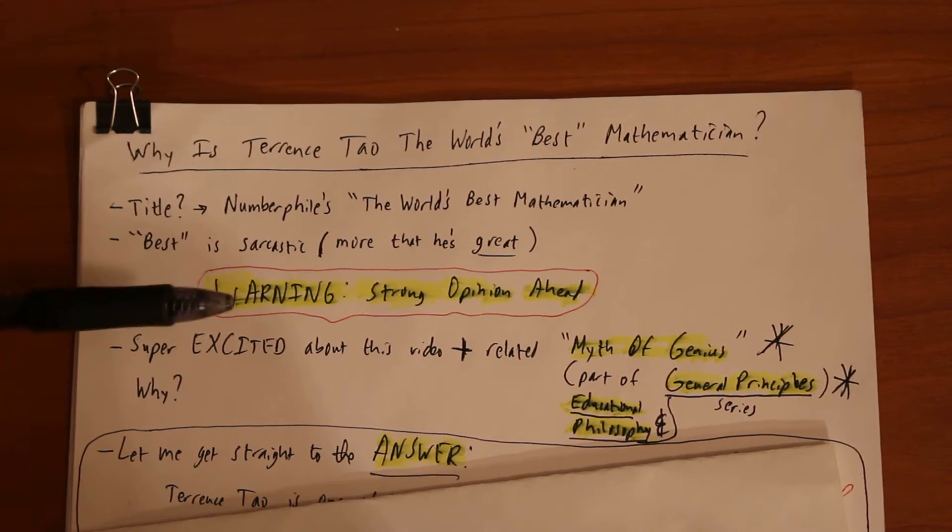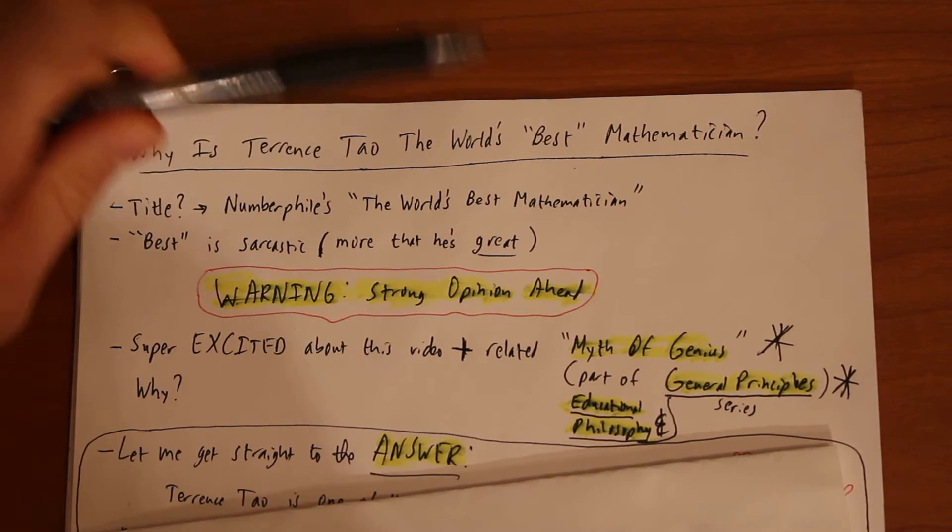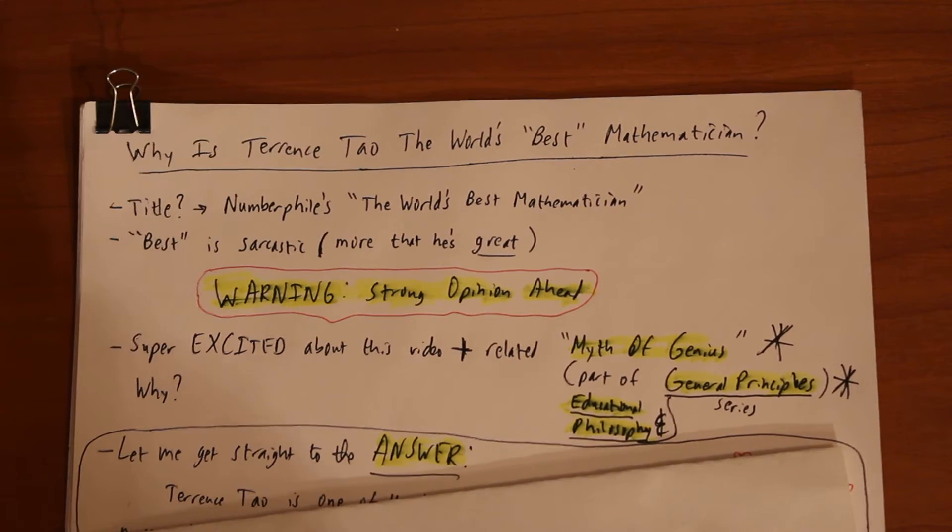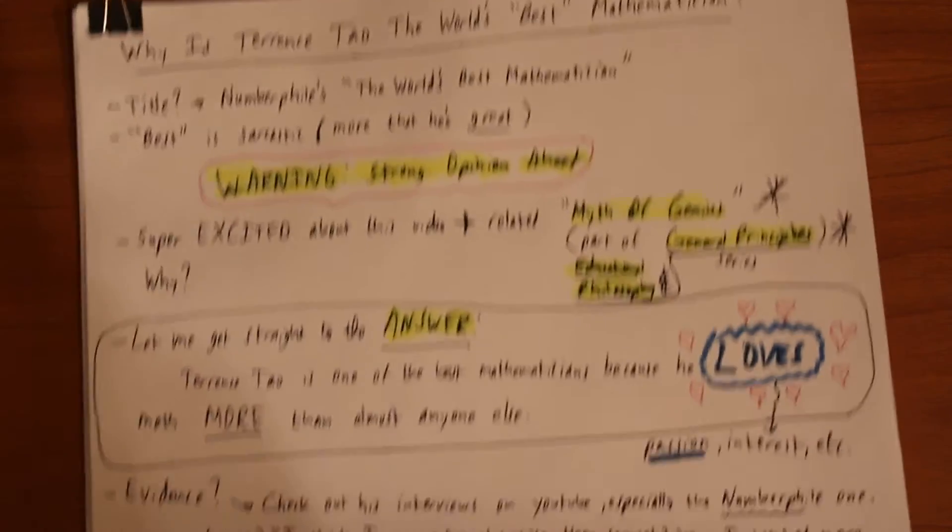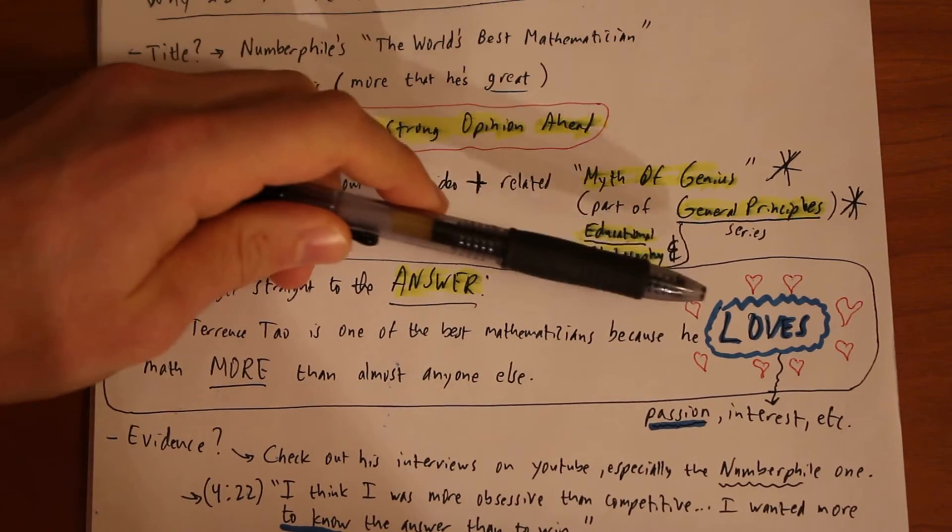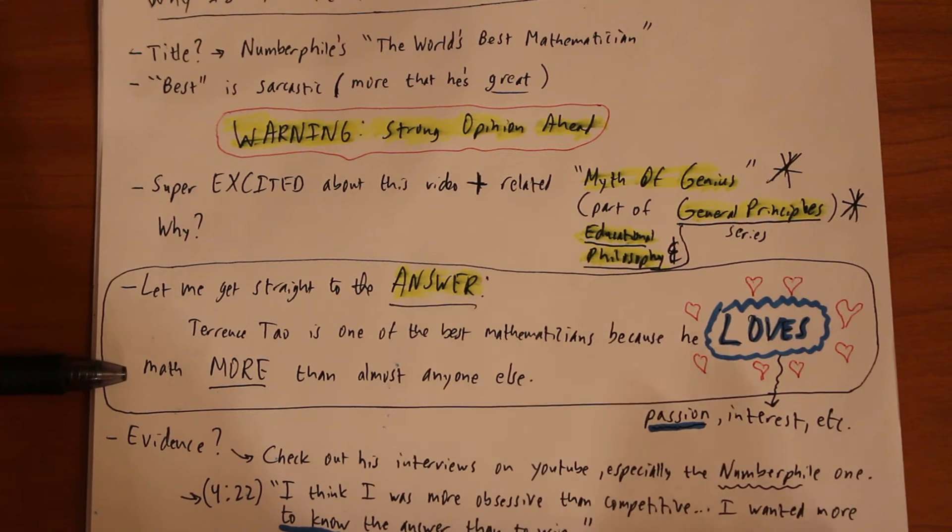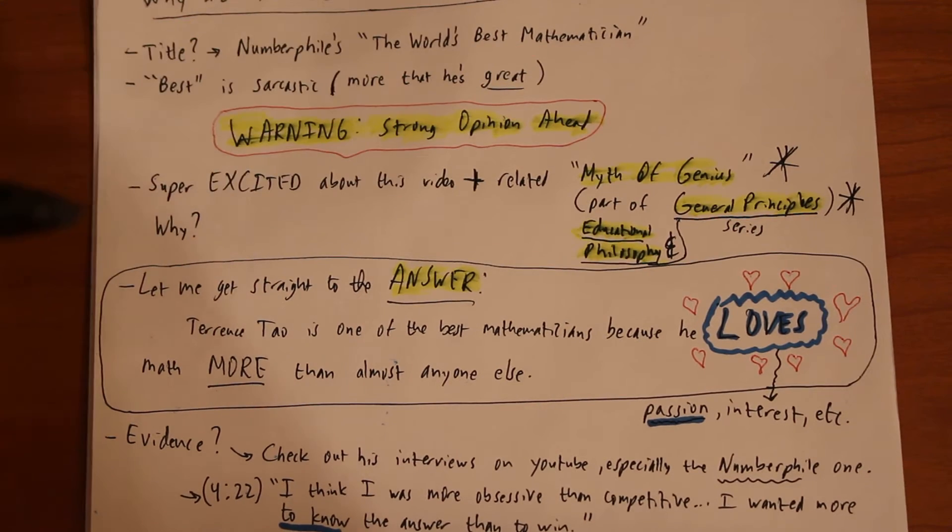So let me get straight to the answer. Why is Terence Tao the world's best mathematician? Terence Tao is one of the best mathematicians because he loves math. It's simply because he loves math more than almost anyone else. That might seem really simple, really ridiculous. You guys might strongly disagree. That's all there is to it.